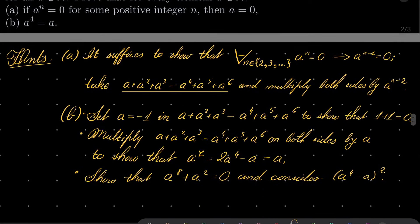And for part B, first set A equals minus 1 in our equation to get this curious property that in our ring 1 plus 1 is 0. Yes — the neutral element of multiplication added together with itself gives us the neutral element of addition in this ring.